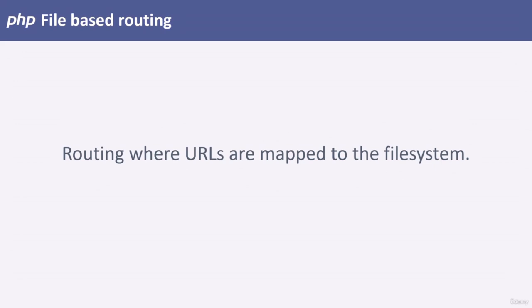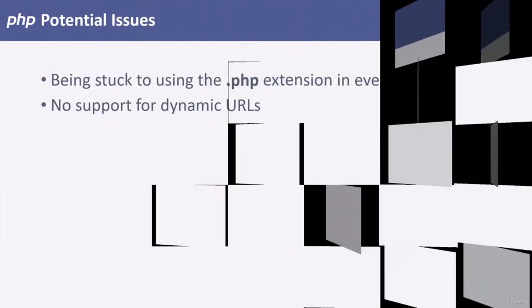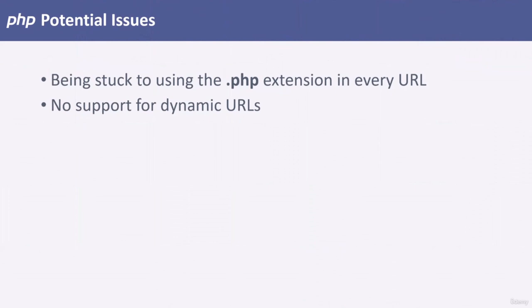This type of routing is referred to as file-based routing. File-based routing maps URLs to our file system. As long as the file exists in a publicly accessible directory, the file can be accessed. While convenient, there are two problems with this solution. The first problem is the URL. Let's say we had a contact page — the file would probably be called contact.php. What if our client decides they don't want to use PHP anymore? They may want to switch to a different programming language like JavaScript or C#. By switching, we would have to drop the PHP extension. If we were to change the structure of our URLs, search engines would penalize our site. It's always good practice to keep URLs consistent for the lifetime of a site.